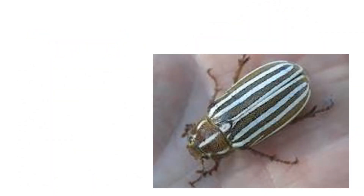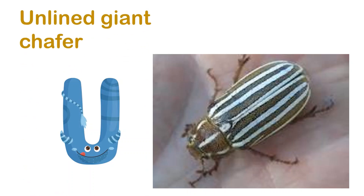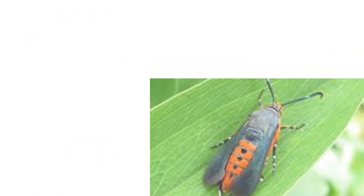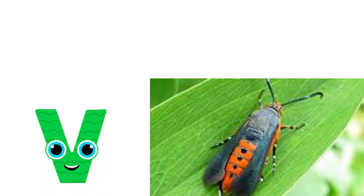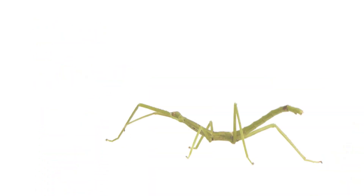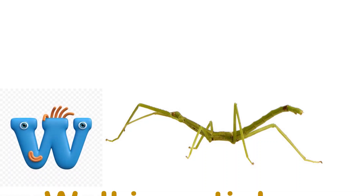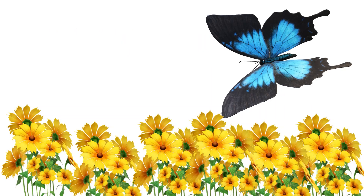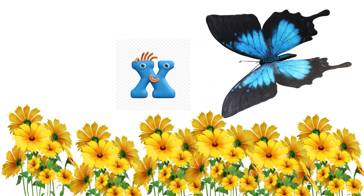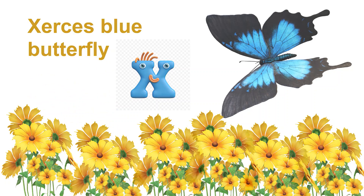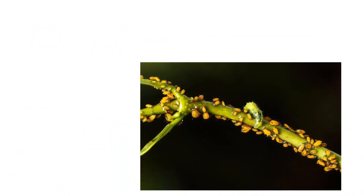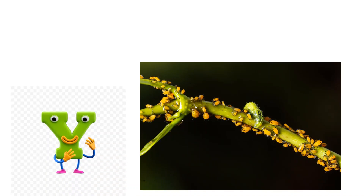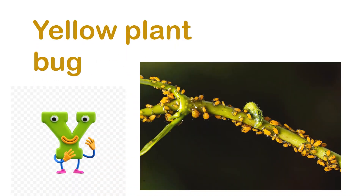U for Unlimited Giant Caffer. V for Vine Borer. W for Water. W for Walking Stick. X for Xeracous Blue Butterfly. Y for Yellow Plant Bug.